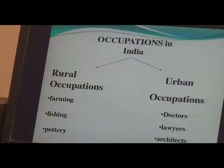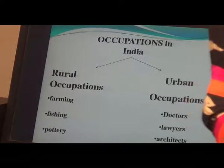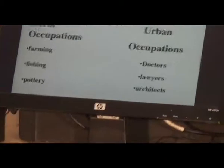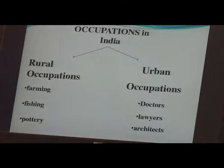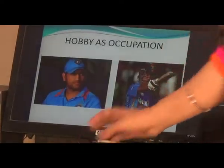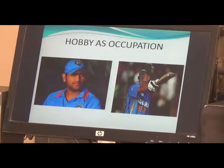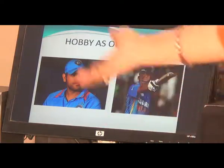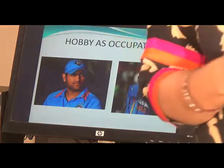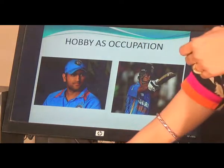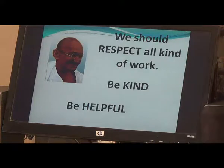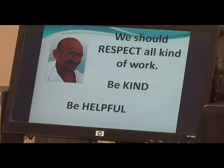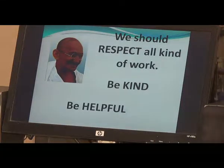People choose occupations as per their interest and skill set. Different types of work require different skills and training. For example, some people make their hobby an occupation. M.S. Dhoni and Sachin Tendulkar are great examples of this — they have made their hobby into an occupation. Now, children, a very important thing which we all should understand and save in our memories.